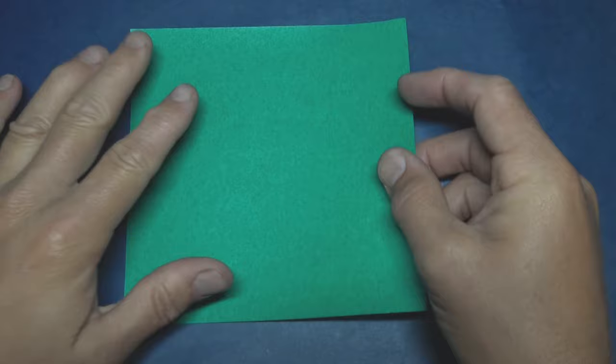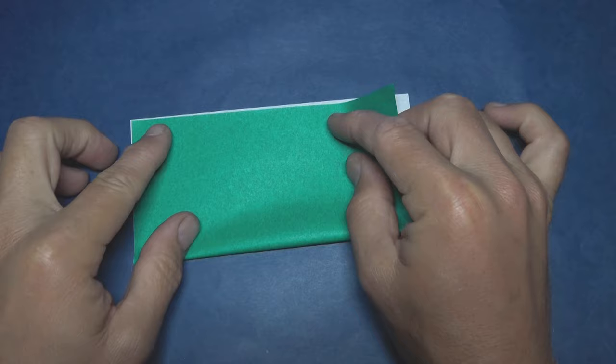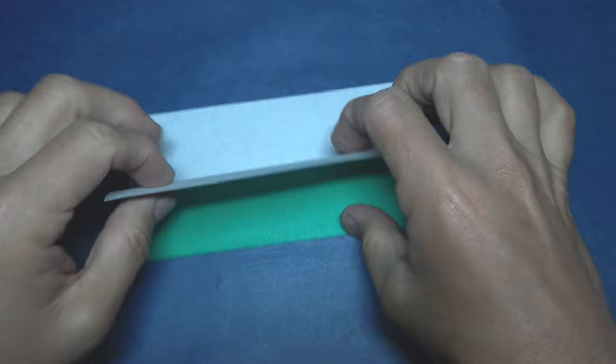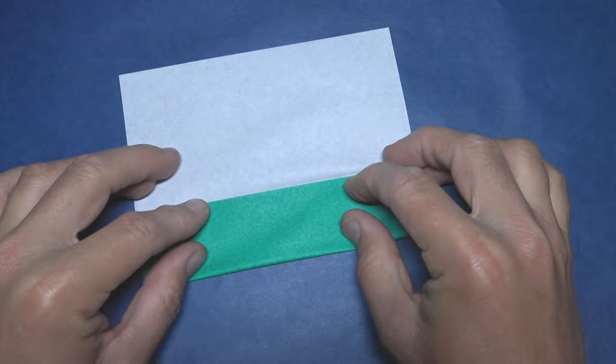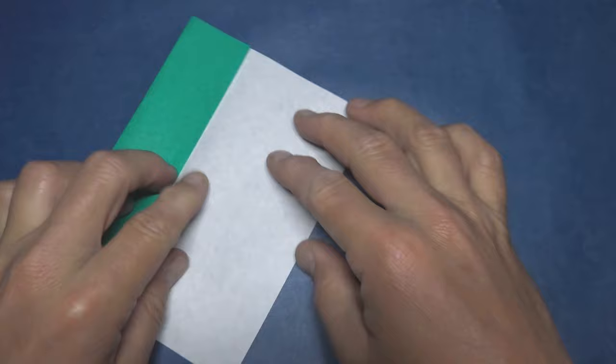I'm going to use a six inch square of kami. I don't really recommend using a sheet of printer paper but you can try. Again, white side up and fold in half. Make sure to make really precise folds and crease sharply. Unfold and fold to the crease and repeat.